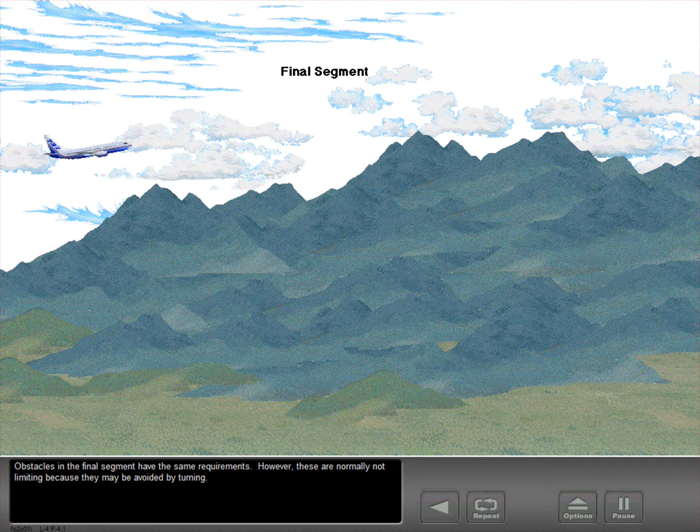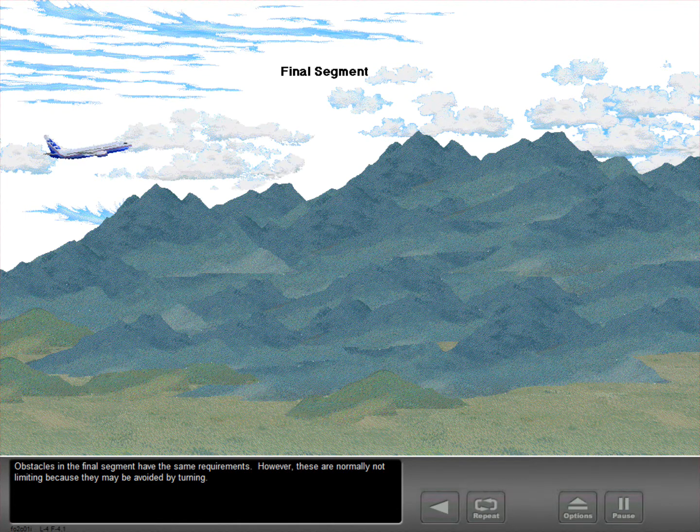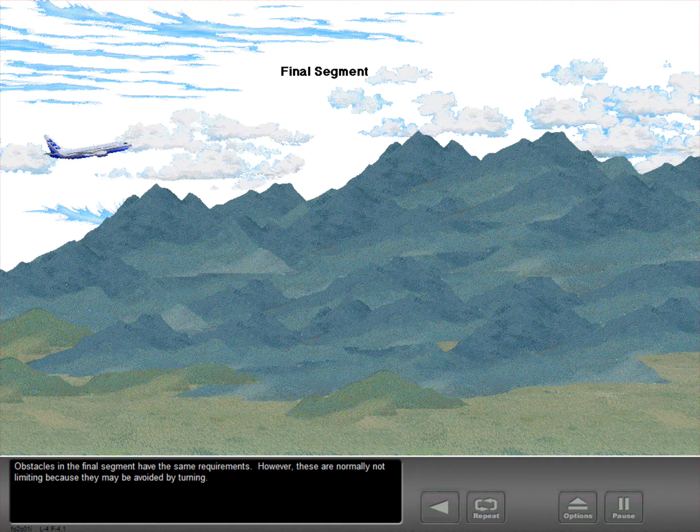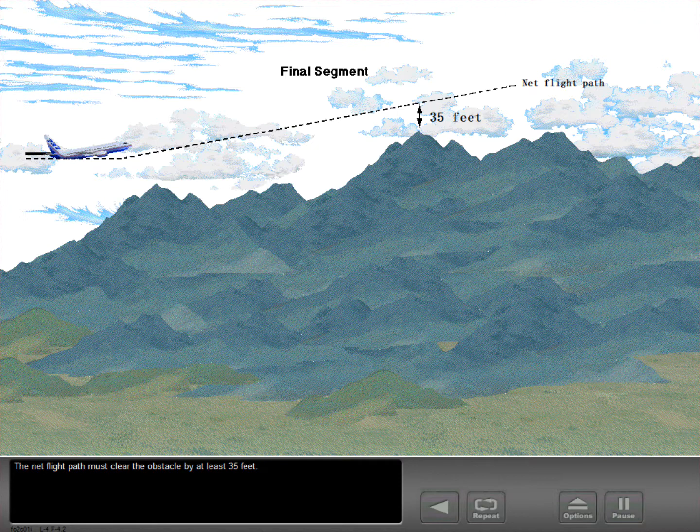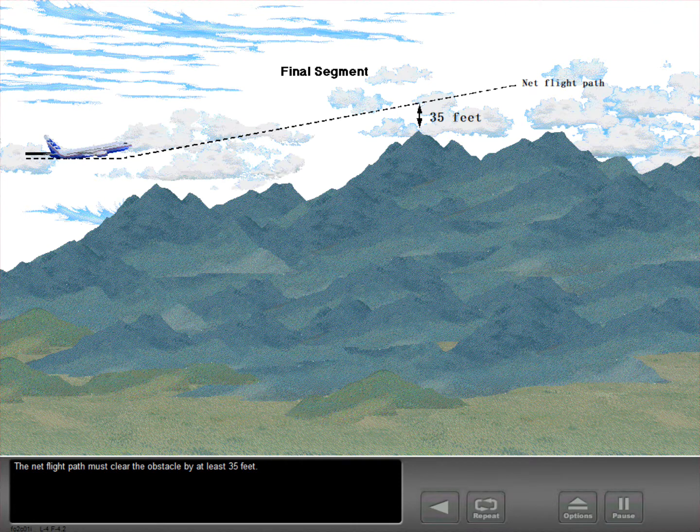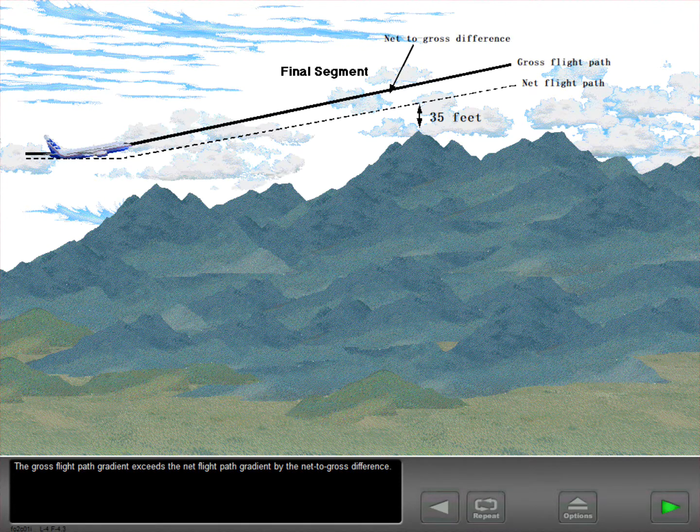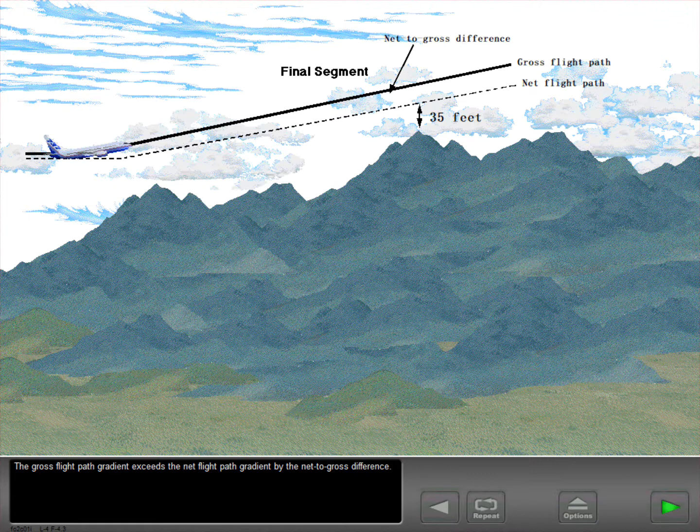Obstacles in the final segment have the same requirements. However, these are normally not limiting because they may be avoided by turning. The net flight path must clear the obstacle by at least 35 feet. The gross flight path gradient exceeds the net flight path gradient by the net to gross difference.